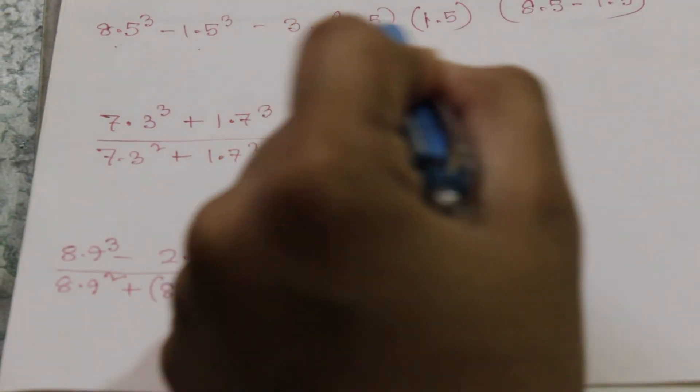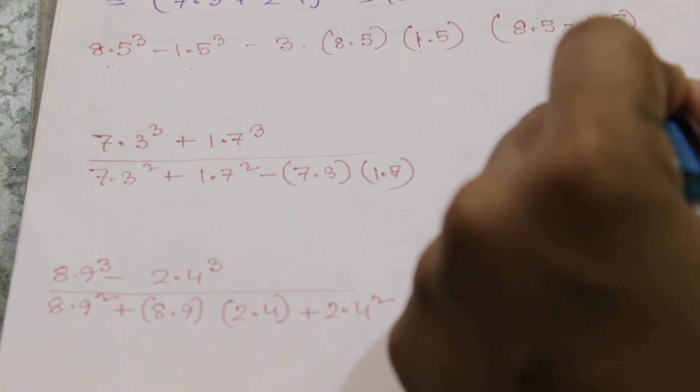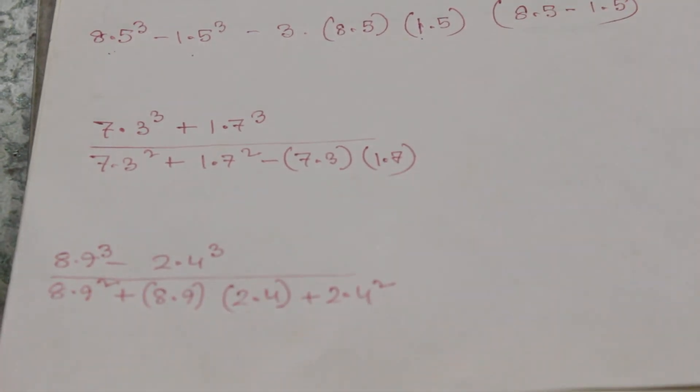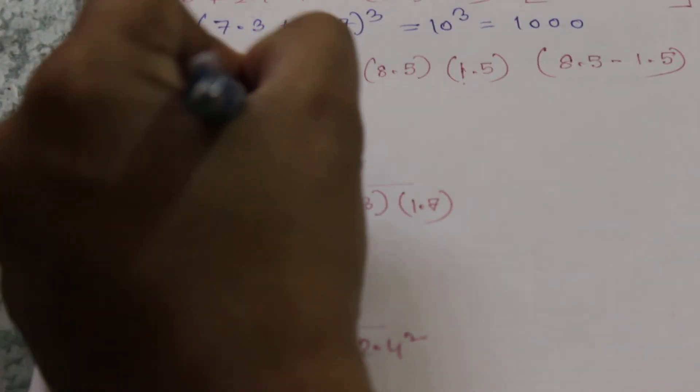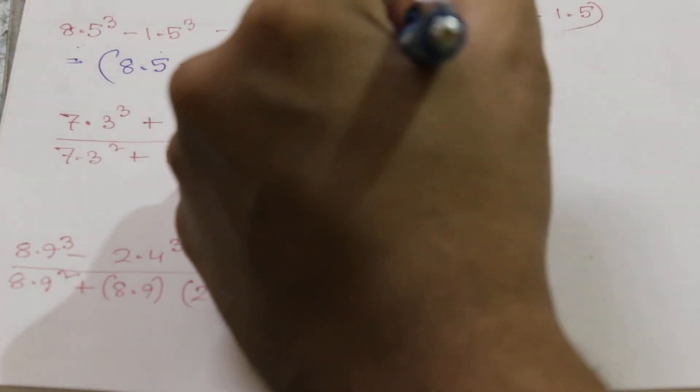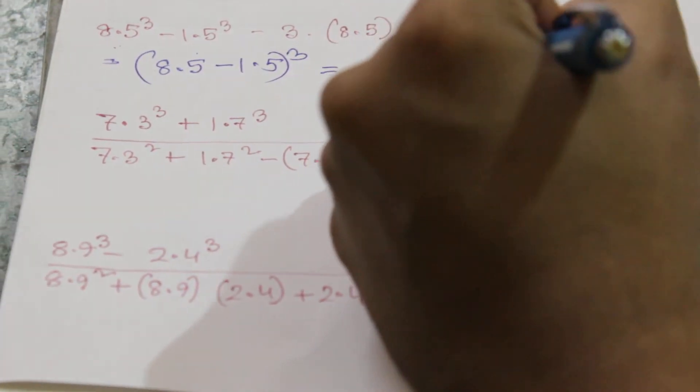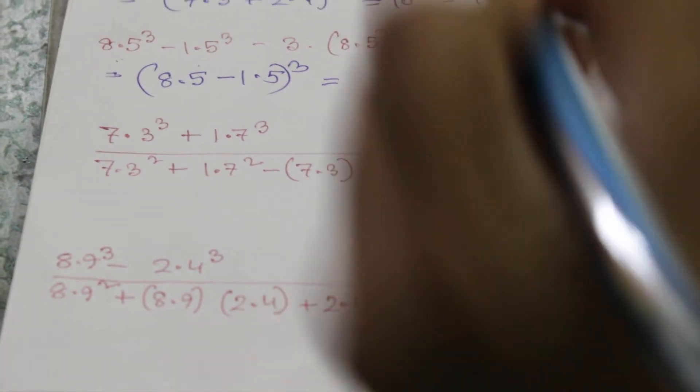The next example involves a cube minus b cube minus 3ab into (a - b). We will use the seventh formula, giving (8.5 - 1.5) as (a - b), so it equals 7 cube. The result will be 343.